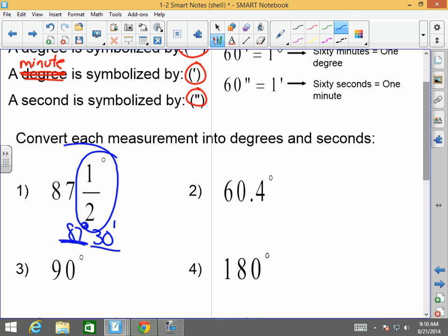How about 60.4 degrees? Well, this is going to be 60 degrees and 0.4 of a degree. So if there's 60 minutes in one degree, 60 times 0.4, we're talking about 24 minutes. So 60 degrees and 24 minutes. Does that make sense?